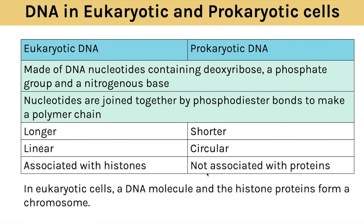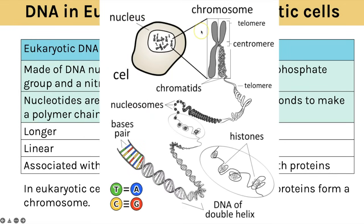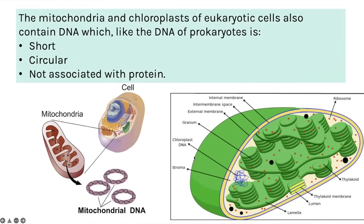The DNA in eukaryotes is associated with histones, but prokaryotic DNA is not associated with those histone proteins. This shows the organisation of DNA in a eukaryotic cell — we have chromosomes within the nucleus that are tightly coiled. If we unwind that, you can see the nucleosomes, which is the DNA wrapped around the histone proteins, and that is how we tightly coil it to fit it all in the nucleus.